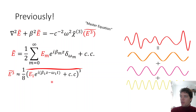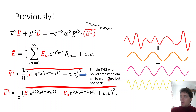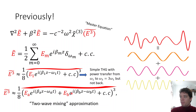In that previous video, I used a simplified expression for the cube of the electric field on the right-hand side of the master equation. It was assumed that the cube of the E field is dominated by just a single frequency component, which allowed a very simple model for third harmonic generation where power could be transferred from omega 1 into omega 3, but not in the backwards direction. In this video, we're going to use a more advanced model with two frequency terms inside the E-cubed expansion — the two-wave mixing approximation.